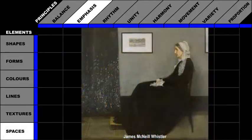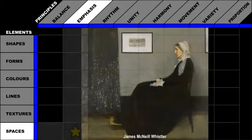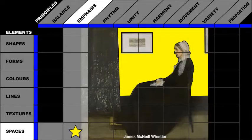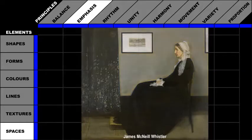Whistler used space to create emphasis. The artist directs attention to the specific areas in his painting, such as the woman's profile and the framed picture, by placing uncluttered space around these items.